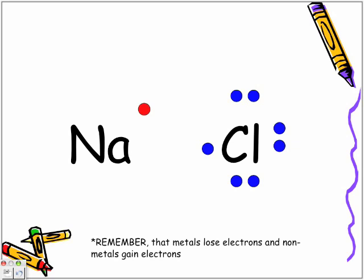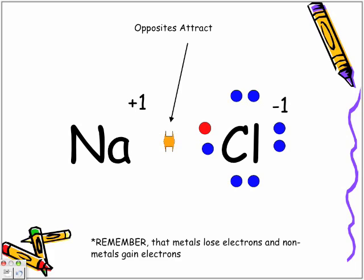Watch it move over. Sodium lost an electron — it lost a negative — so it now has more positives. It has one more positive. And chlorine, or should I say now chloride, because it gained the electron, it gained an additional negative and becomes negatively charged. Opposites attract, so the positively charged sodium attracts the negatively charged chloride, and that's how an ionic bond between sodium and chloride forms.